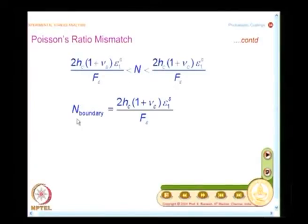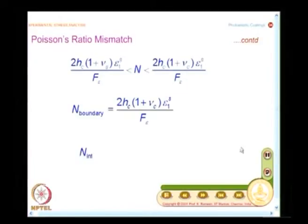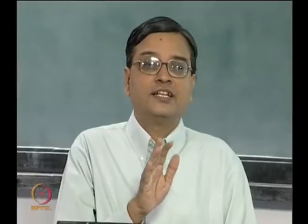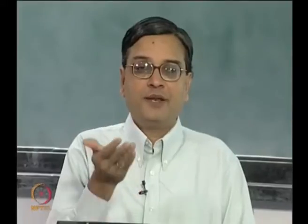The boundary fringe order is given as 2h_C times (1 plus nu_C) times epsilon_1s divided by f_epsilon. The interior fringe order is given as 2h_C times (1 plus nu_S) times epsilon_1s divided by f_epsilon, where f_epsilon is the material strain fringe value. When you have different fringe orders at the boundary and the interior, there has to be a transition zone — people have identified that a transition zone exists near the boundary where the fringe order lies between the two extremes.